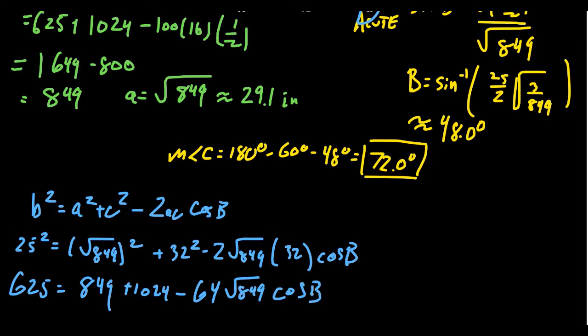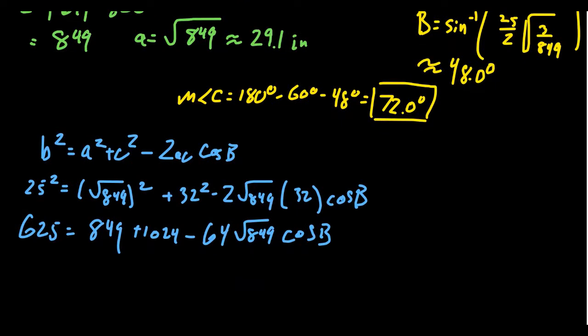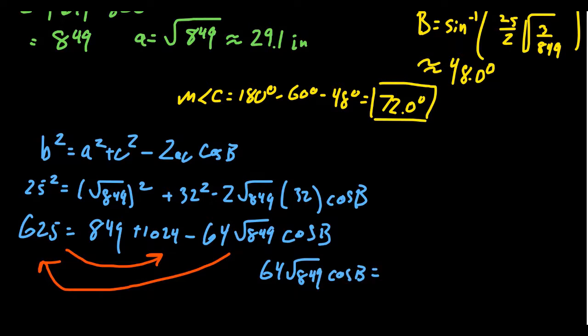So now it's our goal to solve for cosine of B right here. Since we have this negative sign, I'm actually going to move the cosine of B to the other side, and we're also going to subtract 625 from both sides as well. So we get 64 times the square root of 849 cosine of B on the left-hand side now. You get 849 plus 1024, that's 1873. We have to subtract from that 625, which that simplifies to be 1248, like so.